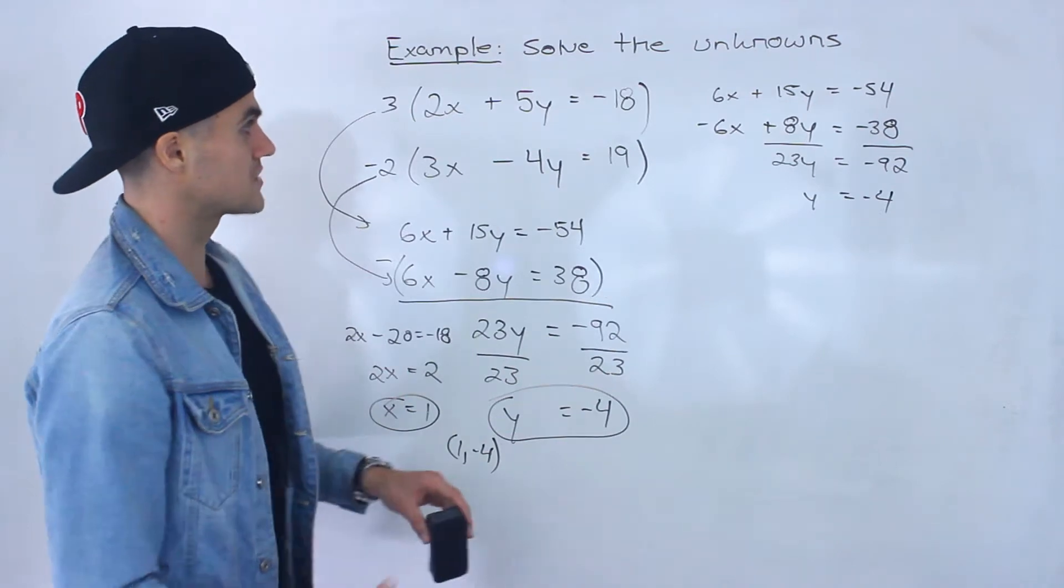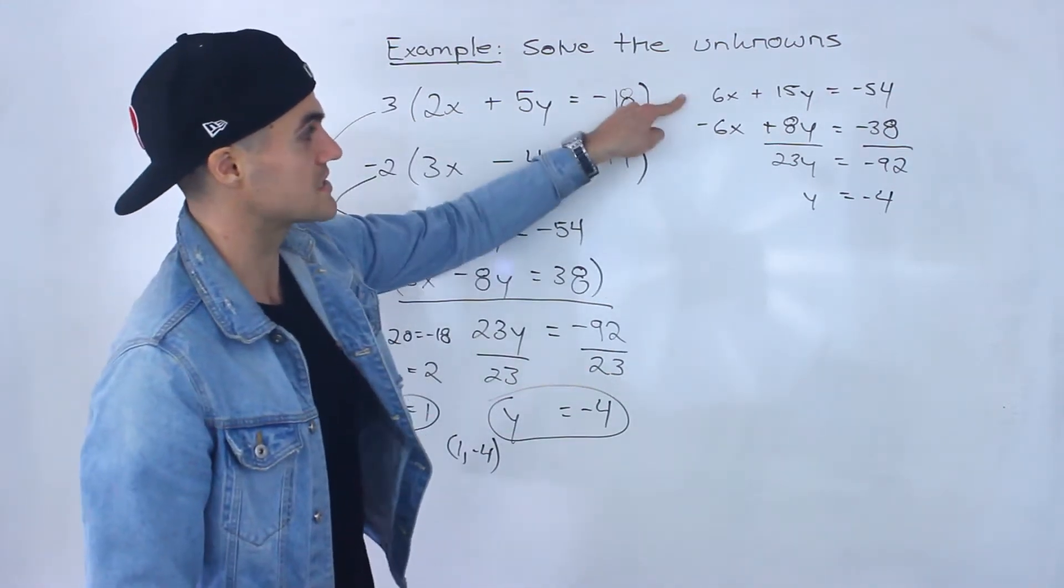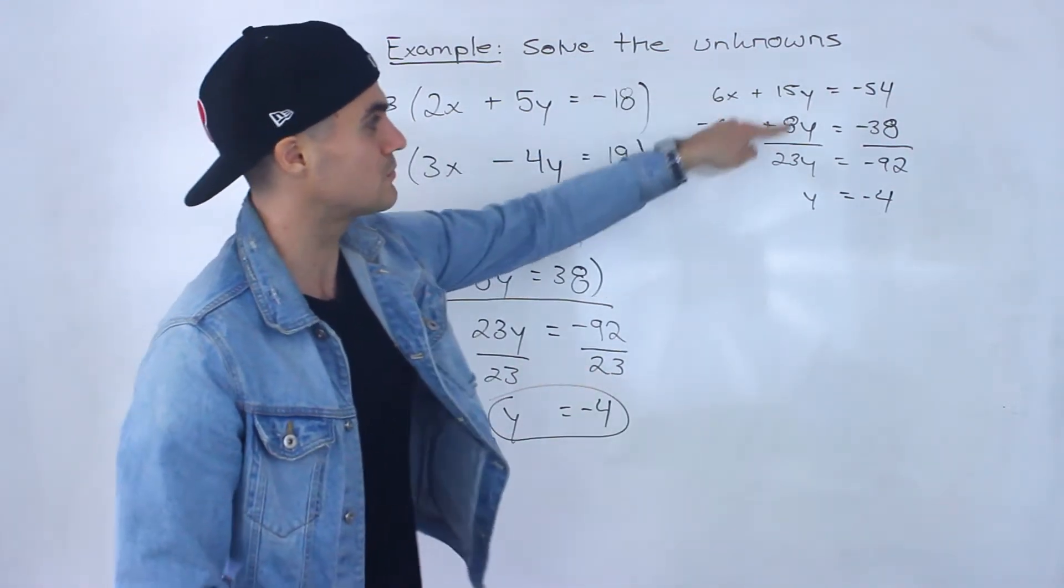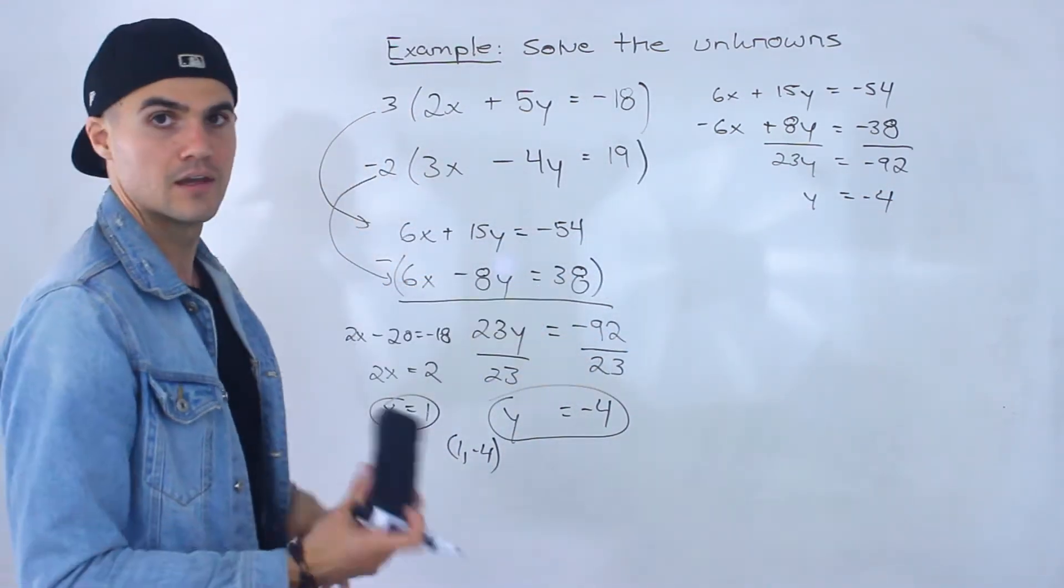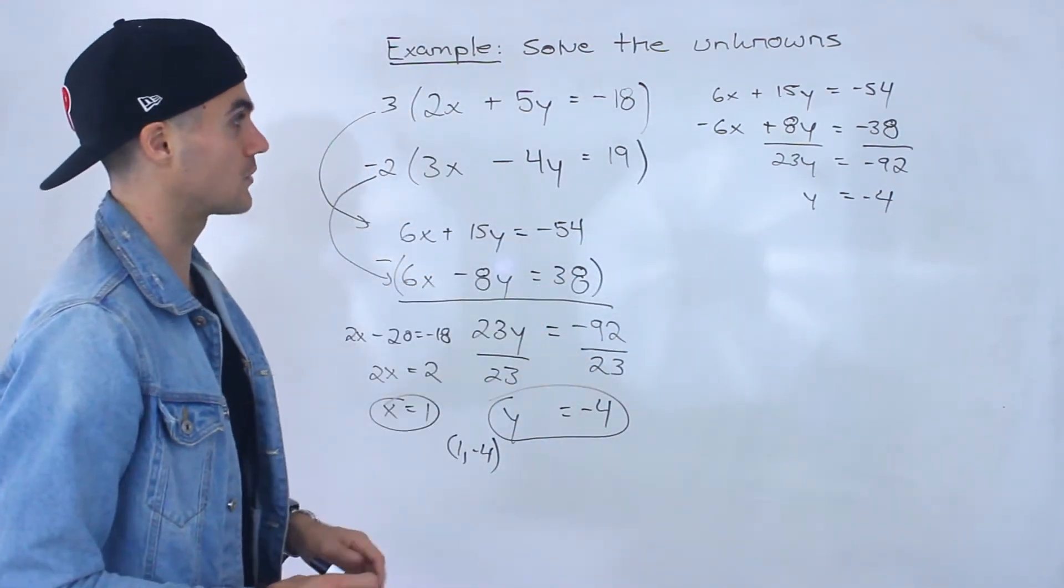Right so different ways to do this. Sometimes students like to get opposite signs here because it's easier to see when you're adding everything you don't have to distribute this negative to this to that. Whichever way you do it just make sure you're getting the right answer.